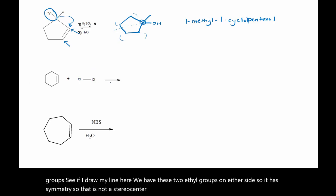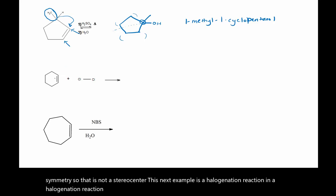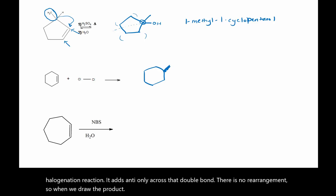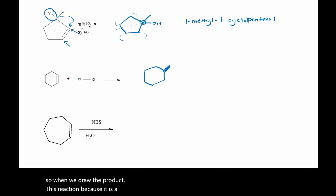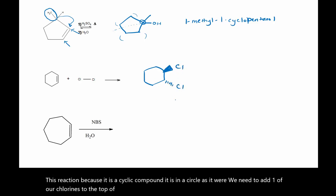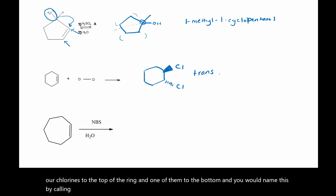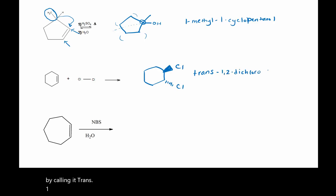This next example is a halogenation reaction. In a halogenation reaction it adds anti only across that double bond. There is no rearrangement. So when we draw the product of this reaction, because it is a cyclo compound — it is in a ring — we need to add one of our chlorines to the top of the ring and one of them to the bottom. You would name this trans-1,2-dichlorocyclohexane.